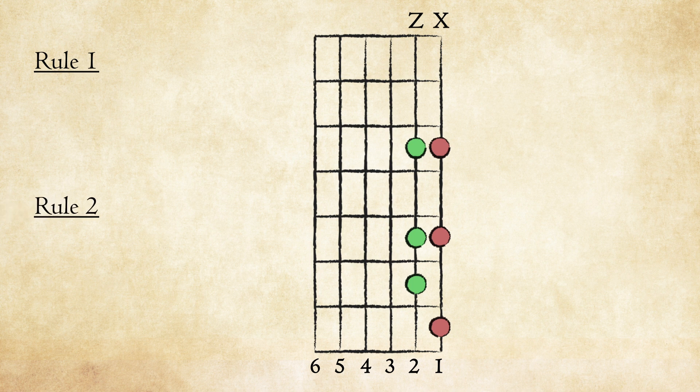Rule number 2: When progressing from the 2nd string to the 3rd string, the 4th finger shifts down one fret.